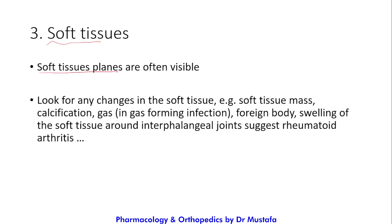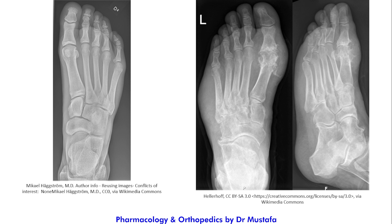After assessing bone and joints, assess the soft tissue. Soft tissue planes are often visible on X-ray. Look for changes such as soft tissue mass, calcification, gas in gas-forming infections, foreign body, or swelling. For example, swelling of the soft tissue around the interphalangeal joints suggests rheumatoid arthritis. Here, on a dorsoplantar projection of the foot, you can see marked soft tissue swelling around the first metatarsophalangeal joint in a patient with gouty arthritis.